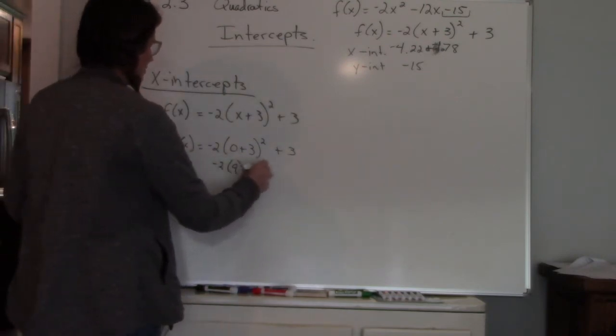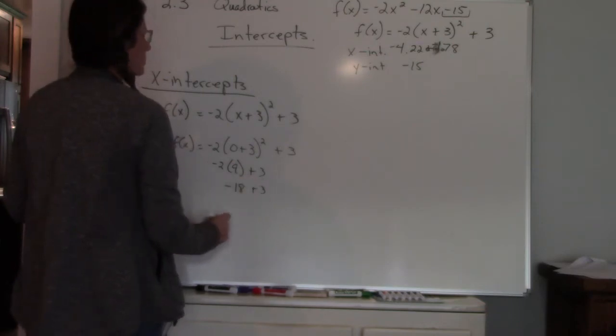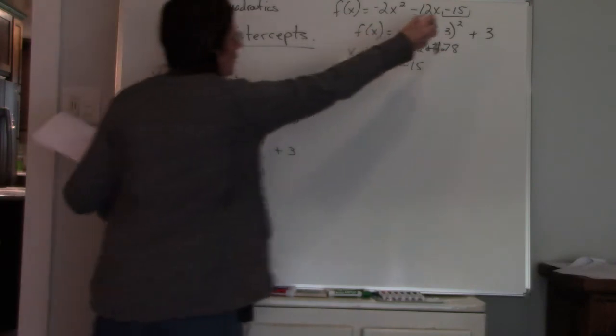So you have negative 2 times 9 plus 3. So negative 18 plus 3. So we get negative 15, which is the same thing as right here.